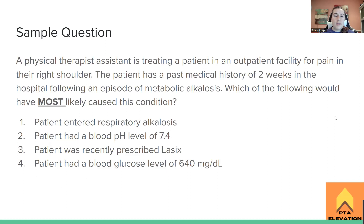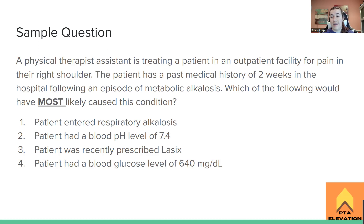Sample board question: A physical therapist assistant is treating a patient at an outpatient facility for pain in their right shoulder. The patient has a past medical history of two weeks in the hospital following an episode of metabolic alkalosis. Which of the following would have most likely caused this condition? (1) Patient entered respiratory alkalosis, (2) patient had a blood pH of 7.4, (3) patient was recently prescribed Lasix, or (4) patient had a blood glucose level of 640.